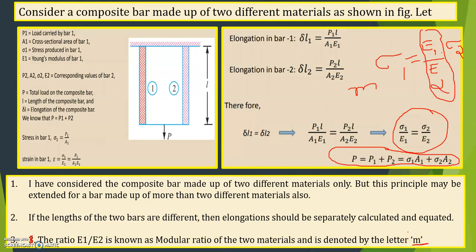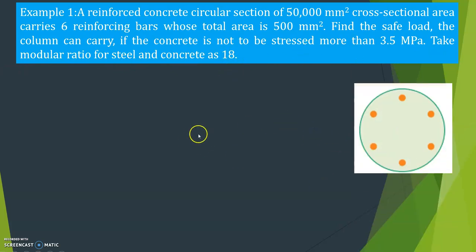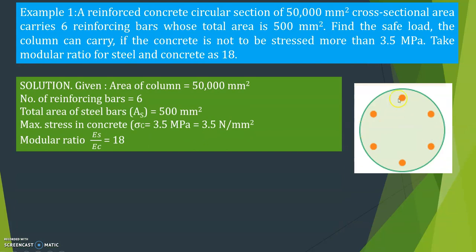This is about bars of composite sections. We will now see one numerical problem. A reinforced concrete circular section of 50,000 mm² cross-sectional area carries six reinforcing bars whose total area is 500 mm². Find the safe load the column can carry if the concrete is not to be stressed more than 3.5 MPa.